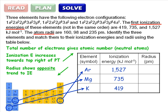We reverse the order for atom radii. Argon is the smallest at 98 picometers, followed by magnesium at 160 picometers, and potassium is biggest at 235 picometers.